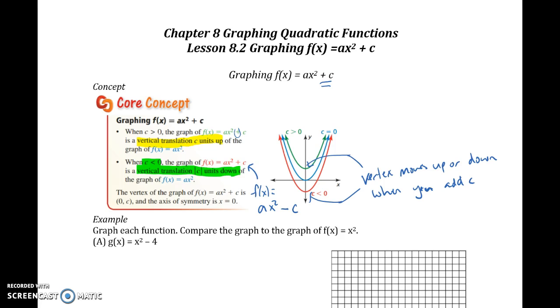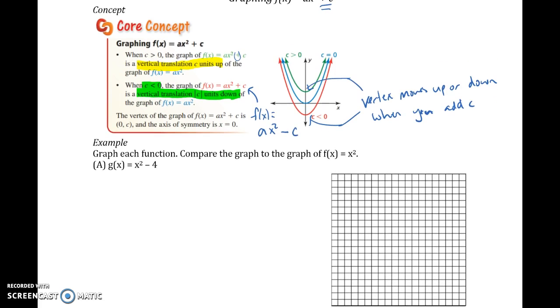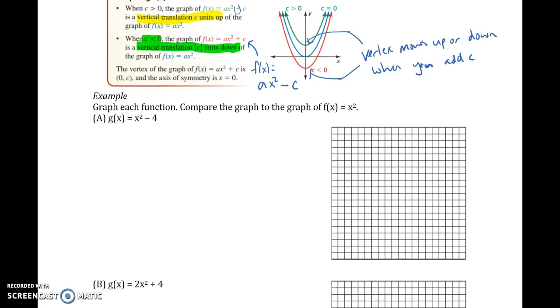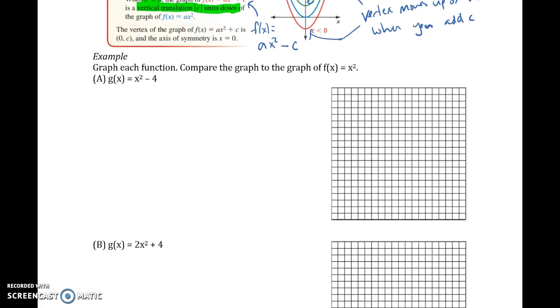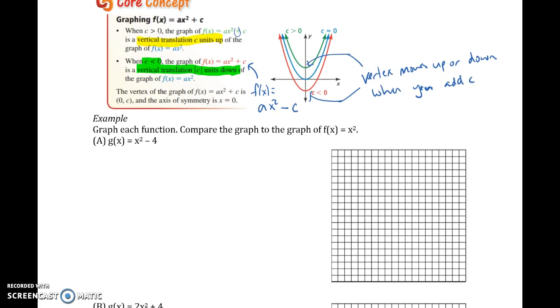Let's take a look at the first example, example A. You notice how we're only moving it up or down for today. So our axis of symmetry is still on the y-axis, it's still where x = 0. So what we want to do is think about what happened to this equation, describing the transformation.